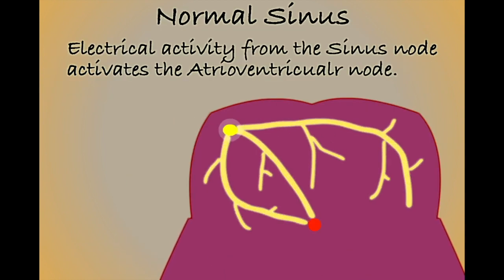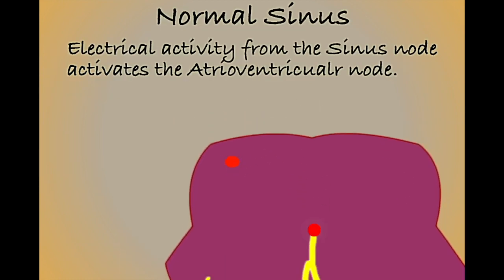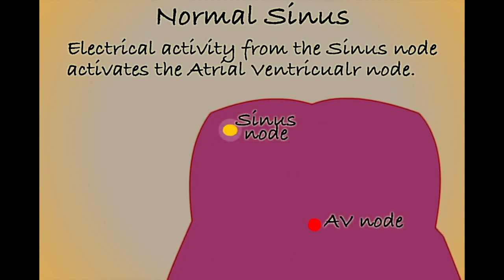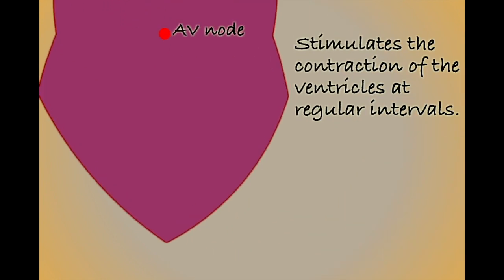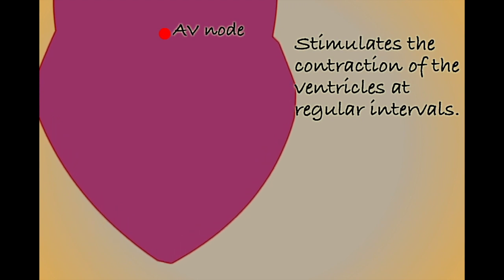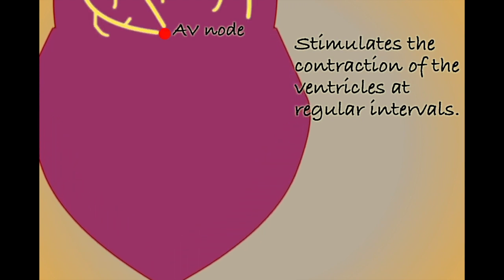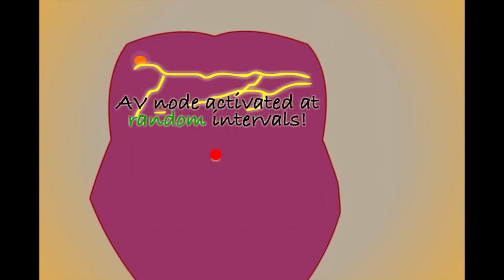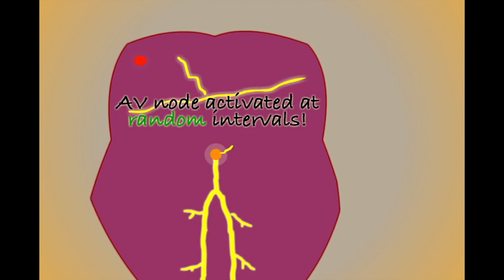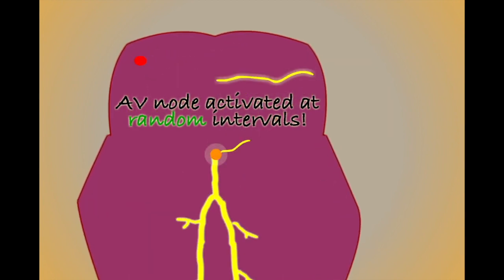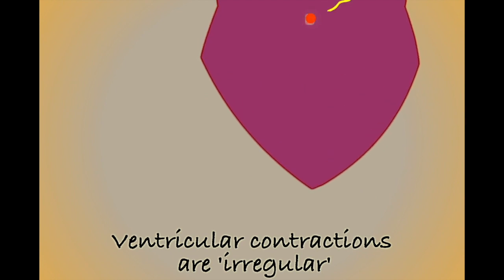In sinus rhythm, the AV node is activated regularly by electrical impulses from the sinus node, leading to the ventricles contracting at the same rate as the atria. In AF, the AV node is activated at random intervals whenever an electrical impulse happens to reach it, leading to irregular contractions of the ventricles.